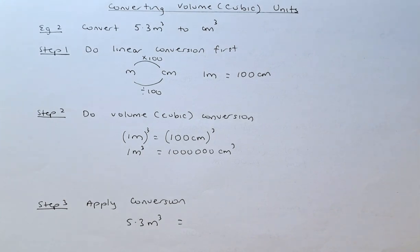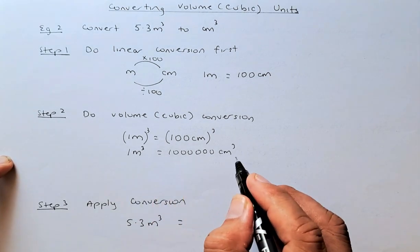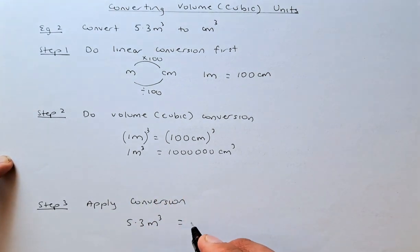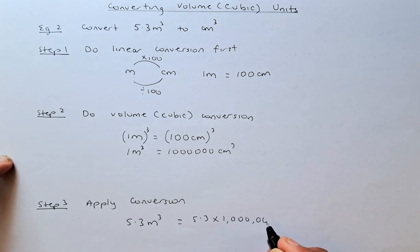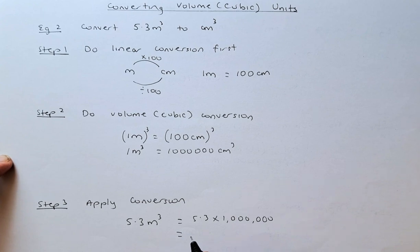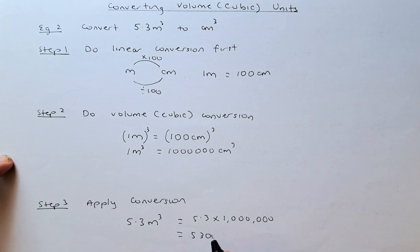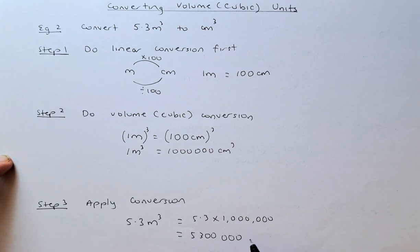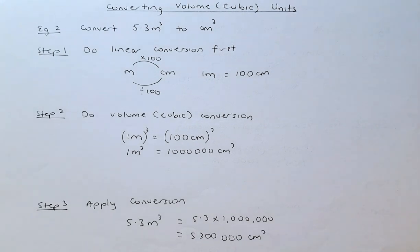So now if you have 5.3 meter cube and you want to convert it into centimeter cube, 1 meter cube is 1 million centimeter cube, so 5.3 meter cube is going to be 5.3 times 1 million. That is how you convert volume, also called the cubic unit.